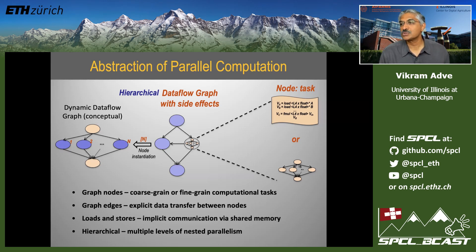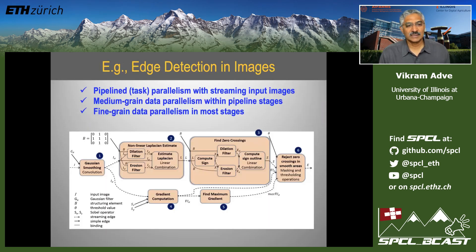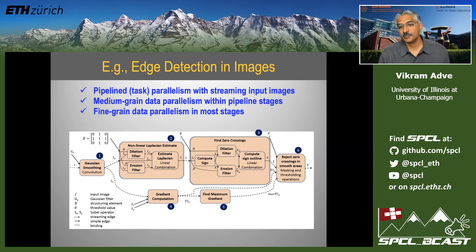This single abstraction represents, we think, all forms of parallelism that occur in heterogeneous systems today, and we can map individual nodes to multiple different targets in the backend system. As an example, a pipeline image processing application for edge detection on grayscale images has pipeline task parallelism with streaming between stages, medium-grained data parallelism within individual pipeline stages, and fine-grained data parallelism in every stage — all represented very naturally in HPVM.